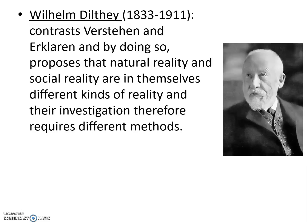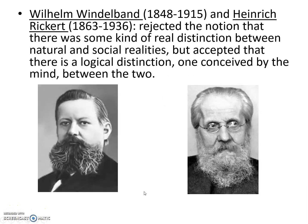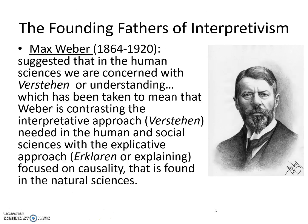Because there are different kinds of reality, their investigation requires different methods. Then you have philosophers Wilhelm Windelband and Heinrich Rickert, who look at this distinction and reject the notion that there is a real distinction between natural and social realities. They accept that there is a logical distinction — one seen by the mind — between the two. So where does Weber sit on this issue? On one hand, he agrees with Windelband and Rickert in rejecting Dilthey's real distinction between natural reality and social reality, and believes there is only a logical distinction between them.